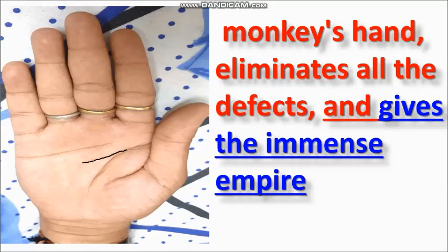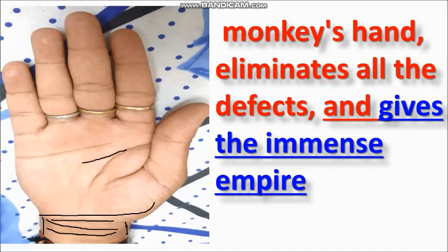Now I am telling you something related to monkey hand — how can you identify it even with so many defects in this hand. First of all, you have to check your bracelet area. If there are more than two, or you can say four bracelet lines here, that is the first sign for making lots of money and immense empire. This wrist is something narrow comparatively to the palm.